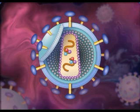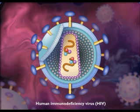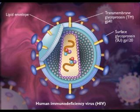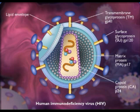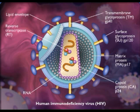AIDS is caused by the Human Immunodeficiency Virus, HIV. This is an enveloped virus. The envelope is derived from the host cell membrane with viral glycoproteins such as GP120 and GP41 inserted into the membrane as the virus leaves the cell. The core is composed of P24 capsid protein and the P17 matrix protein helps maintain viral structure. Inside the core are two identical copies of single-stranded RNA viral genome and three enzymes: reverse transcriptase, protease, and integrase.